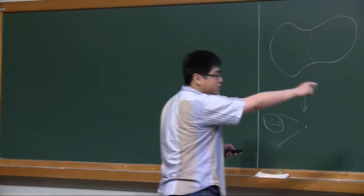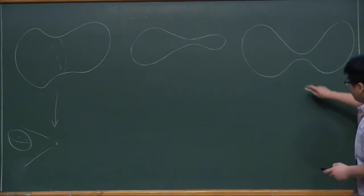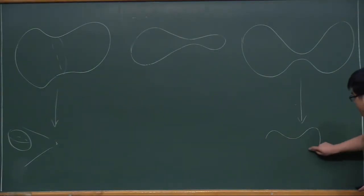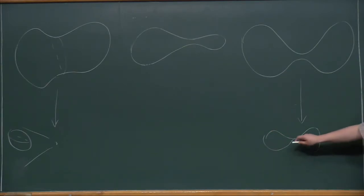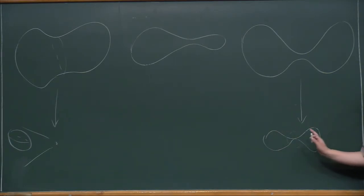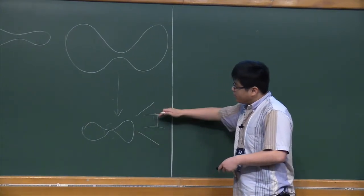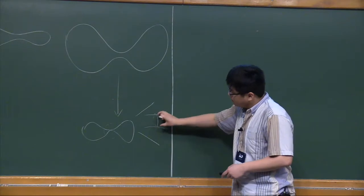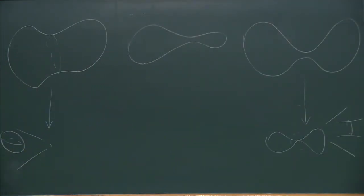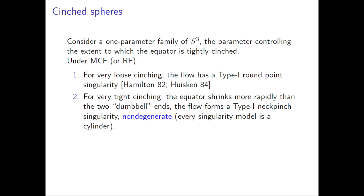On the other extreme—the cylinder—in finite time something singular happens: the neck part becomes singular while the rest remains nice. If you zoom in, you would see something that looks like a cylinder. Since the cylinder's curvature behaves like that of the sphere, you're still in a type 1 singularity. But in this case, when you blow up, you see a neck pinch—you always see a cylinder—and we call that a non-degenerate neck pinch.